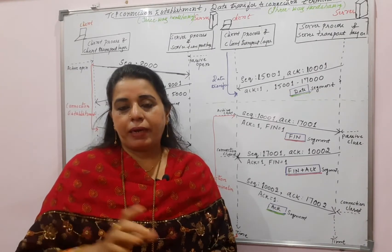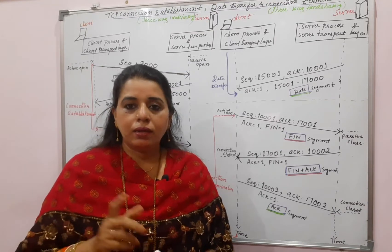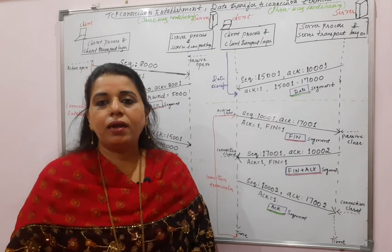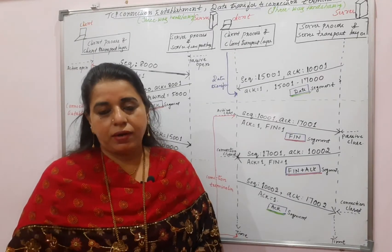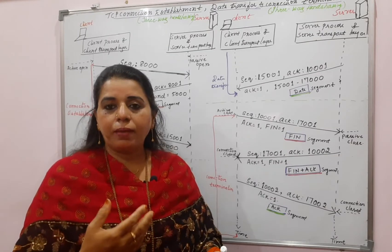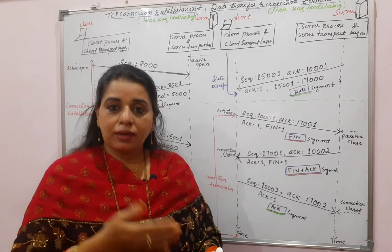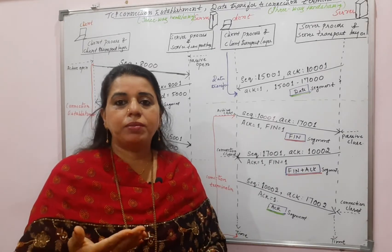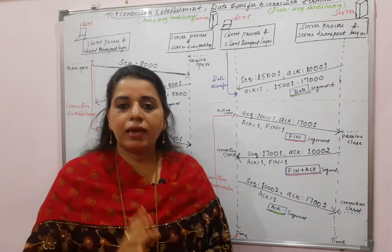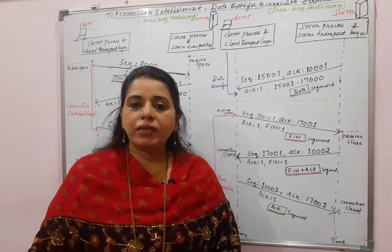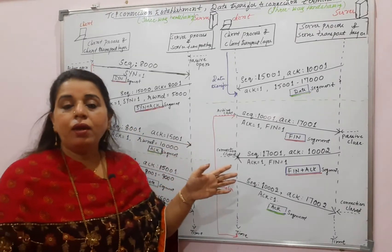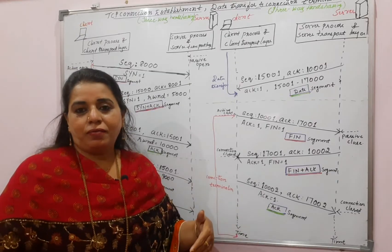This aspect — connection-oriented — before the client starts sending the data, it wants to establish a connection with the server. The basic idea is the client is asking the server: are you ready to take data from me? The server acknowledges, then the client says I am sending the data. In the connection establishment, there are three signals exchanged, and we call this the three-way handshaking mechanism.